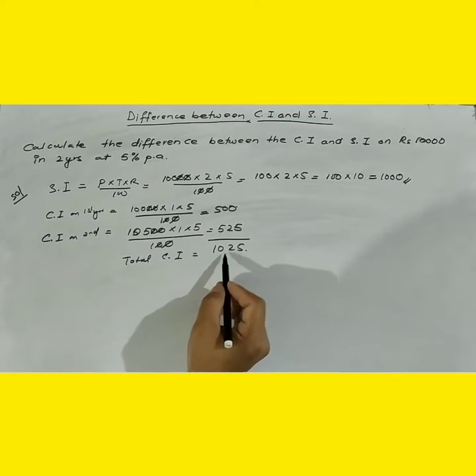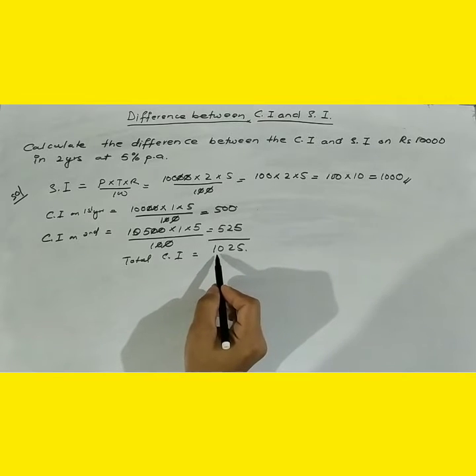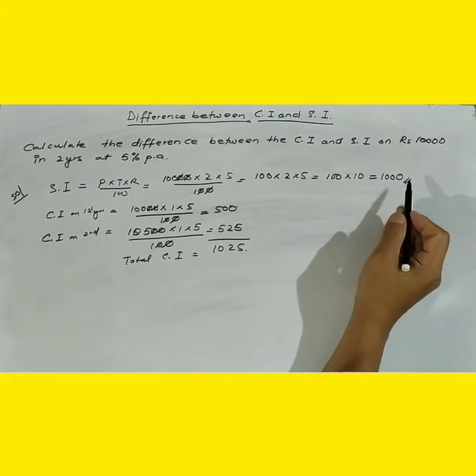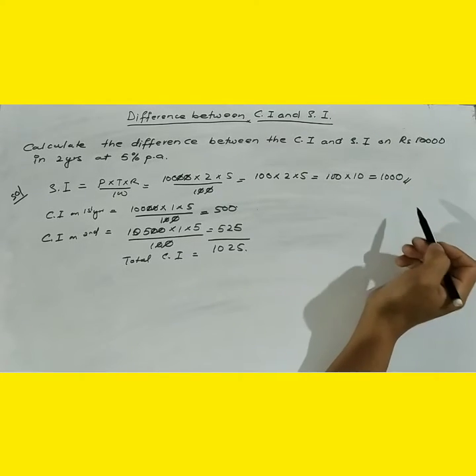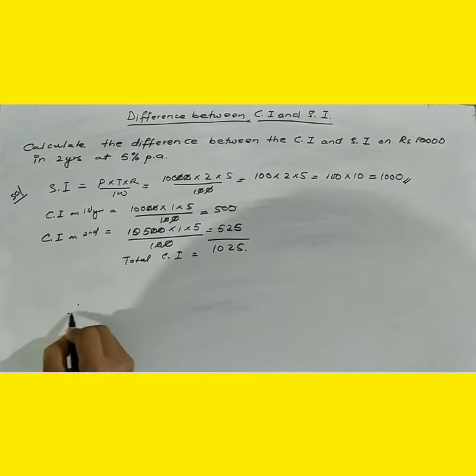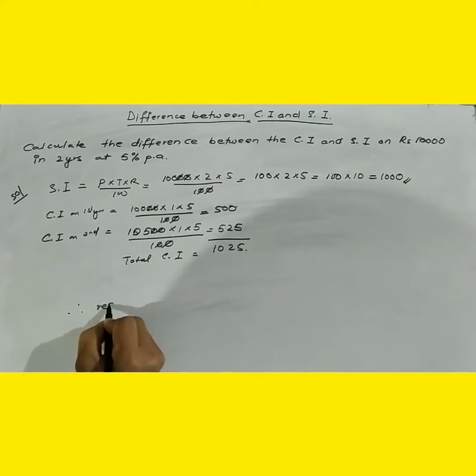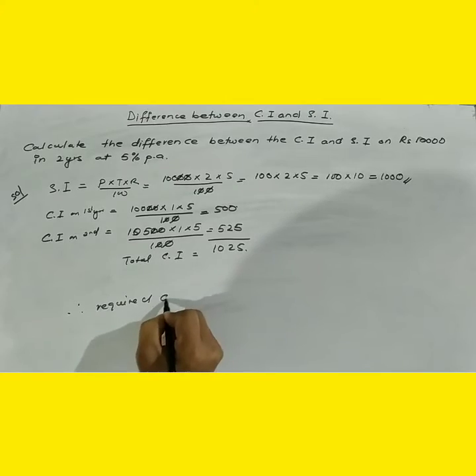So the compound interest that we got is 1025 and the simple interest on the same amount, at the same time, at the same rate, we got 1000. Therefore, the required difference